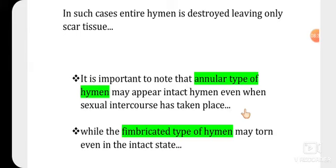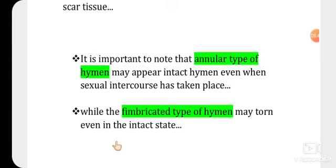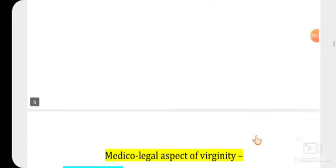It is important to note that the annular type of hymen may appear intact even when sexual intercourse has taken place. On the other hand, the fimbriated type of hymen may be torn even without sexual intercourse — there is a chance the hymen can be torn in the intact stage with the fimbriated type. These are exceptional types of hymen with important medicolegal implications.